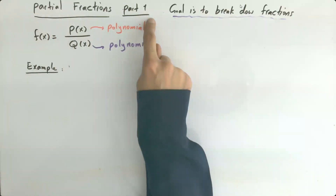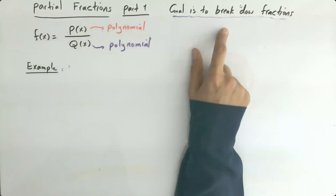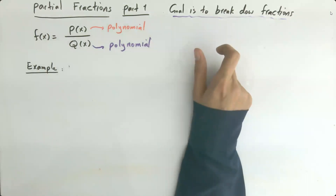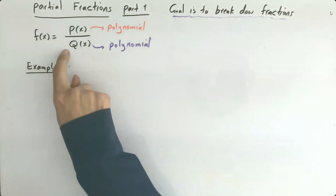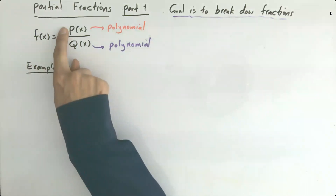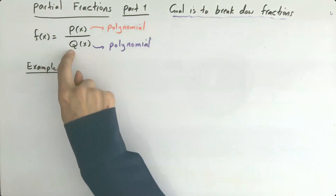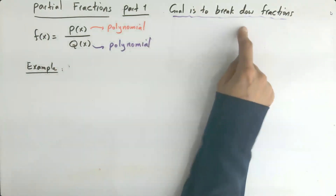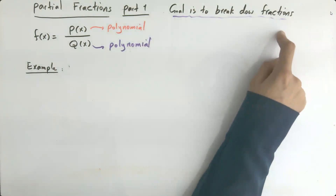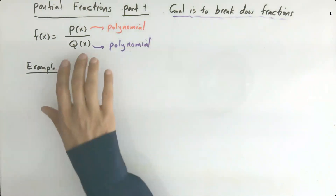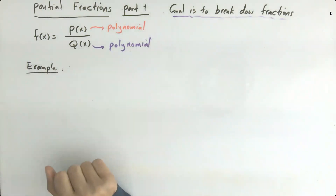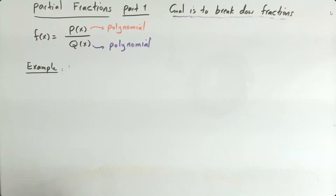Partial fractions, part one. Our goal is to split or break down fractions into simpler forms. Suppose you have a rational expression — a polynomial on the numerator and another polynomial on the denominator. The very first case is when you have a quadratic expression on the denominator. Suppose I ask you to split the following fraction into simpler forms.